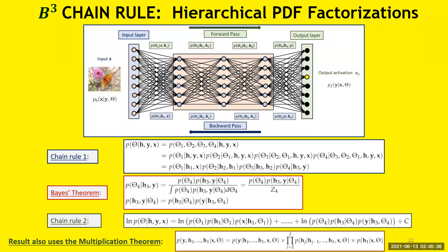In the B-cubed case, we get a hierarchical factorization. We can represent the priors for the weights between different layers — theta 1, theta 2, theta 3, and theta 4 — conditioned on the entire network structure: hidden layers H, observed input X, and output Y. The multiplication theorem and chain rule factor that. Applying Bayes' theorem to each term, in the numerator we have a likelihood — for example, the probability of H3 and Y given theta 4 — and we apply the chain rule again to factor that. We can do this depending on what we want to optimize and where in the network: everything, small pieces, or just between certain layers.